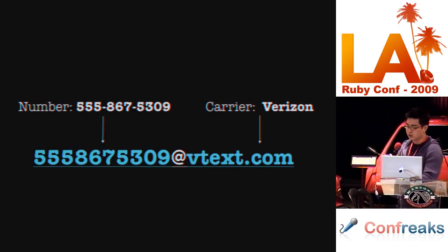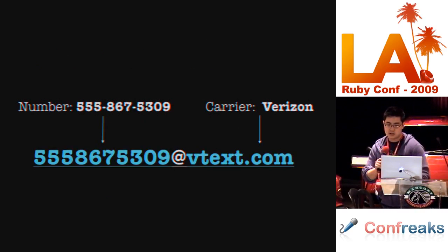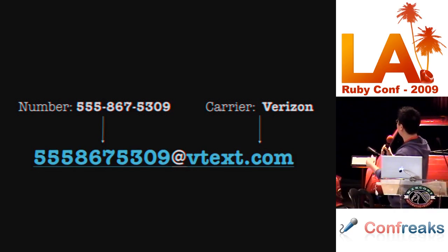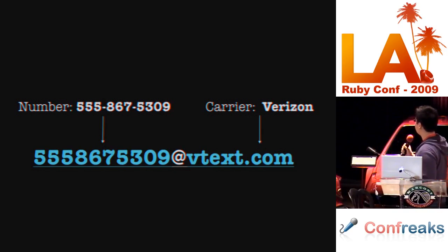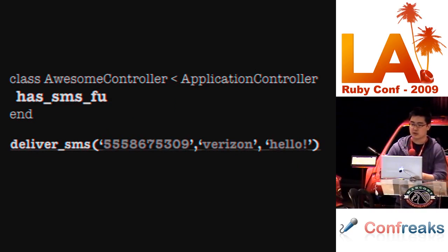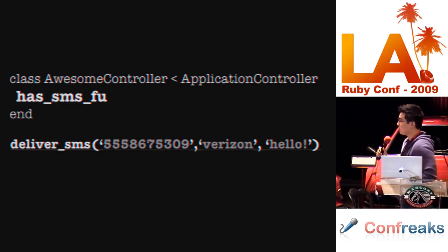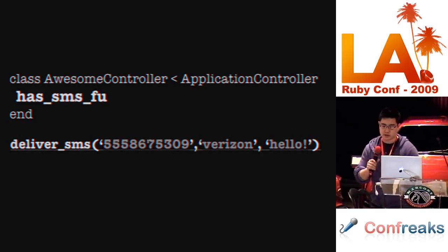Here's how SMS Foo works. If you know the person's phone number and carrier — say the number is 505-827-5309 and the carrier is Verizon — the domain for Verizon's SMS is `vtext.com`. You put `has_sms_fu` in one of your controllers and call `deliver_sms` with the phone number, carrier, and your message. It's a good idea to queue this up since it will actually block your request, as it is sending out an email.